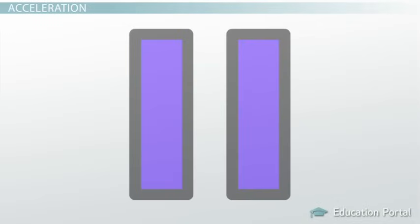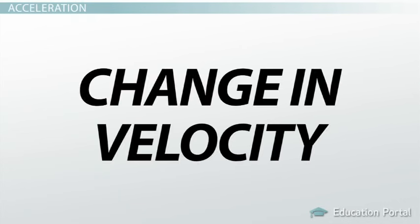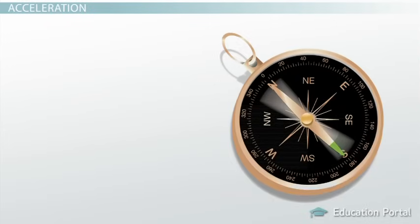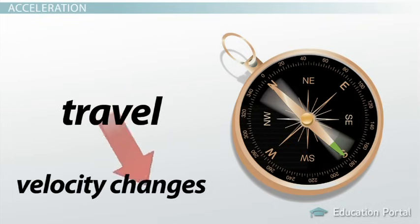I want to pause for a minute here to clarify a couple points. First, in everyday usage, acceleration has come to mean speeding up. If you press on the accelerator in your car, the car's speed increases. Acceleration has a slightly different meaning in physics, though. The definition specifically mentions a change in velocity, not speed. Remember, velocity has a direction attached, so if the direction of travel changes, the velocity changes, even if the speed remains constant.